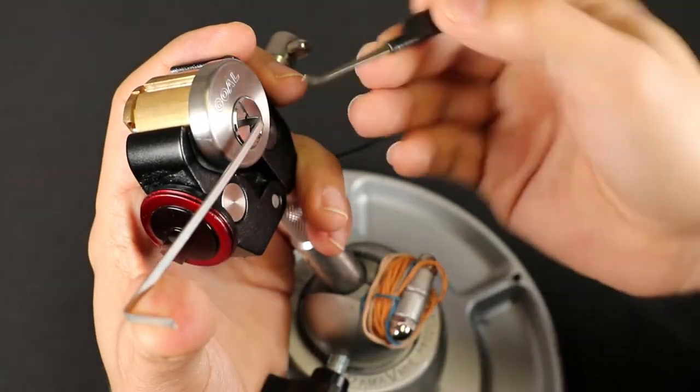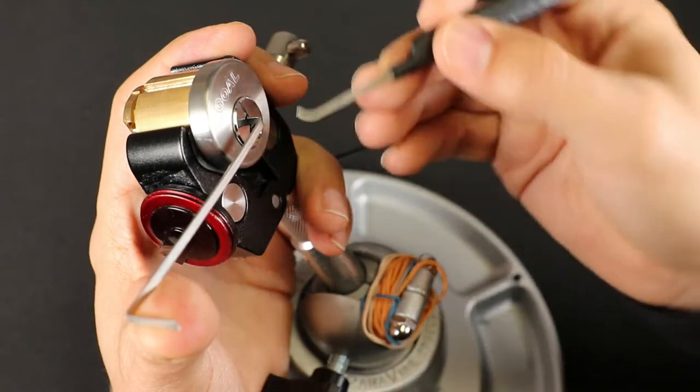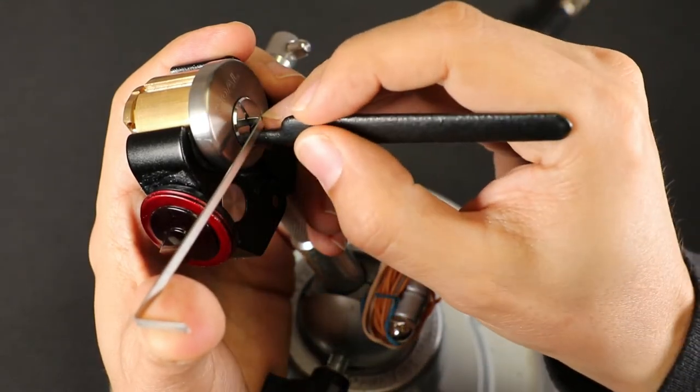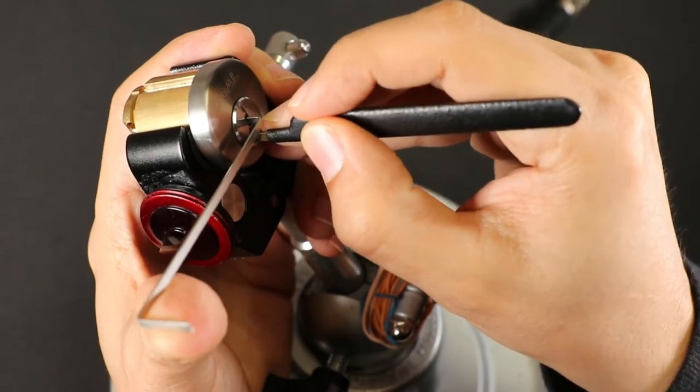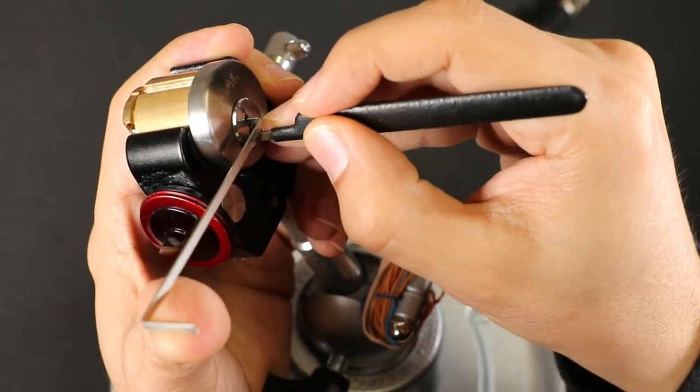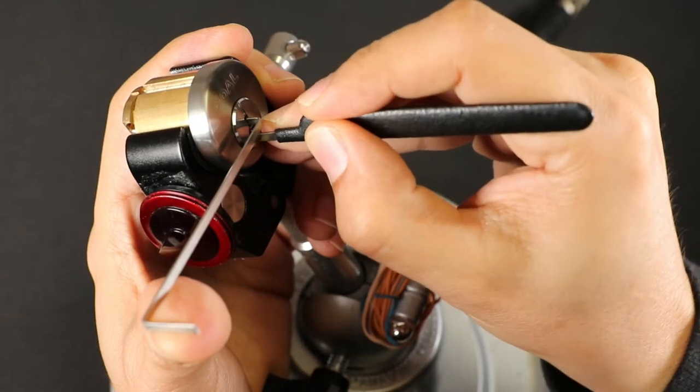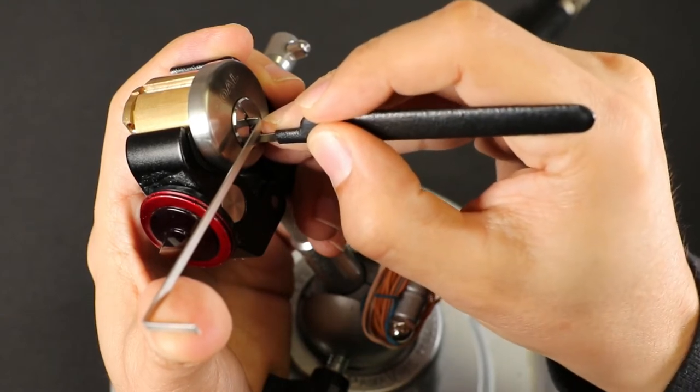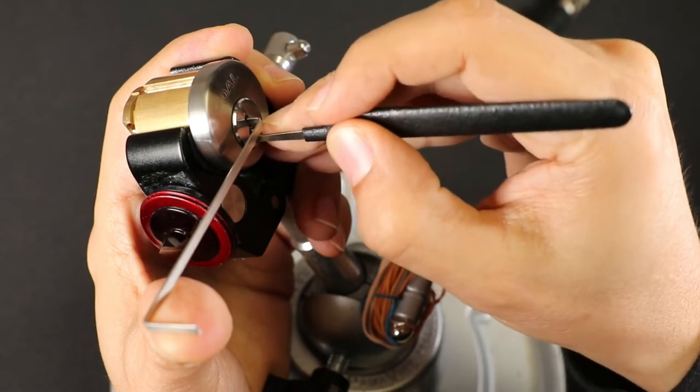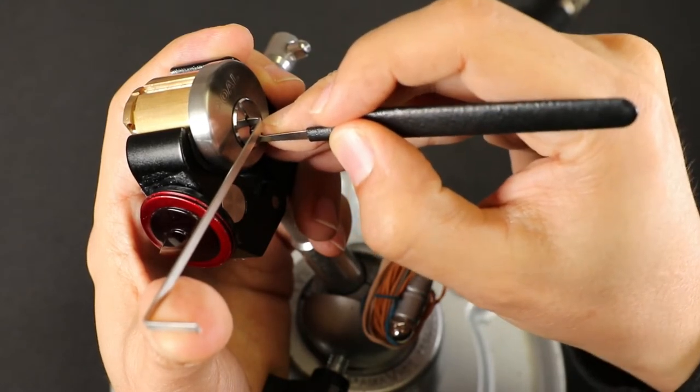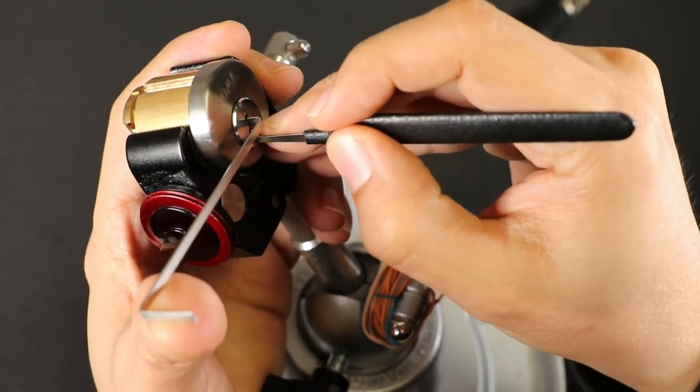So what we're going to do is we're going to want to look for the standards first, drop us into a false set, and then we'll start dealing with the spools. So number seven is springy. Number six, binding, a little click, and now it feels jiggly. Five is springy. Four is springy. Three, a little click, and now jiggling. And we dropped into a false set.